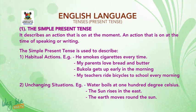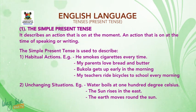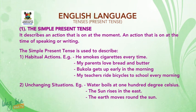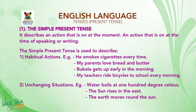2. The simple present tense can be used to describe unchanging situations. For example: Water boils at 100 degrees Celsius. The sun rises in the east. The earth moves round the sun.